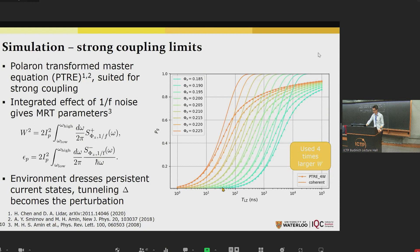Next, we consider the strong coupling limit, which we model using the polaron transformed master equation. In this model, the effect of 1 over F noise is given in terms of these MRT parameters, the MRT width W and the reorganization energy epsilon_p, which are given in terms of integrals of the noise spectrum. In this model, the environment dresses the persistent current states, and so system energy eigenstates no longer describe the system well. Your tunneling delta becomes a perturbation parameter. You see that its prediction agrees with our measurement data in the small phi-x limit, but not in the large phi-x limit.